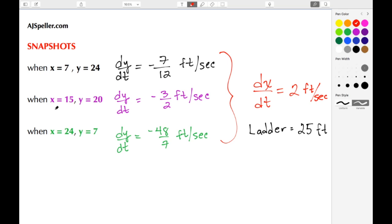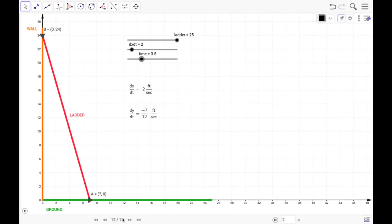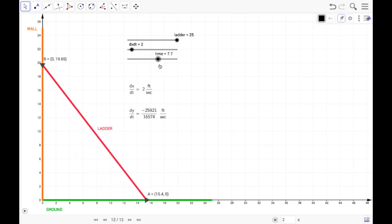Let's do our next example or our next snapshot where x is 15. We know the y value is going to be 20, so let's go where we're 15 feet from the wall. Let's go down, keep going. And here we are at 15 feet from the wall.